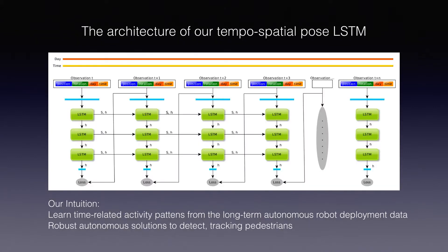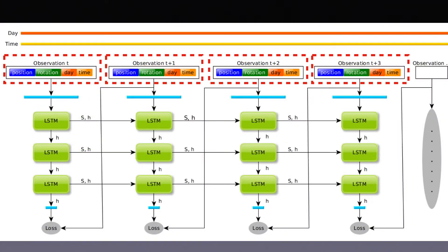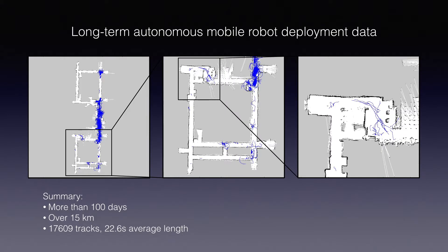In our approach, a triple-layer LSTM is trained in a sequence-to-sequence encoder-decoder form to predict future pedestrian poses. We include periodic time information in the training of human trajectories, and extend 2D position trajectory learning to 3-degree-of-freedom pose trajectory learning. We train and evaluate our approach using more than 15 km of pedestrian trajectories recorded in a care home environment over a period of 3 months.